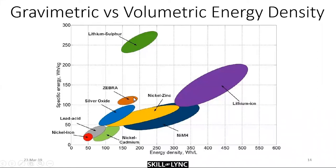The Zebra battery is an interesting one — it was actually called Zero Emission Battery Research Africa, and came to be known as the Zero Emission Battery Research Association or something like that. It has sodium nickel chloride chemistry — not particularly high voltages, but the overall specific energy density was pretty high for that kind of chemistry.